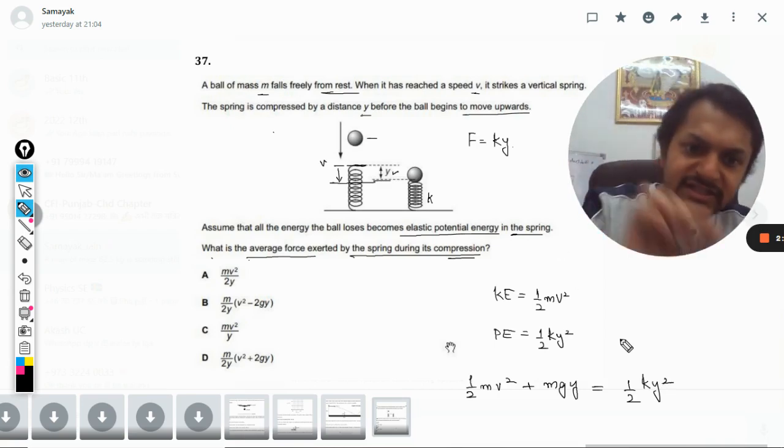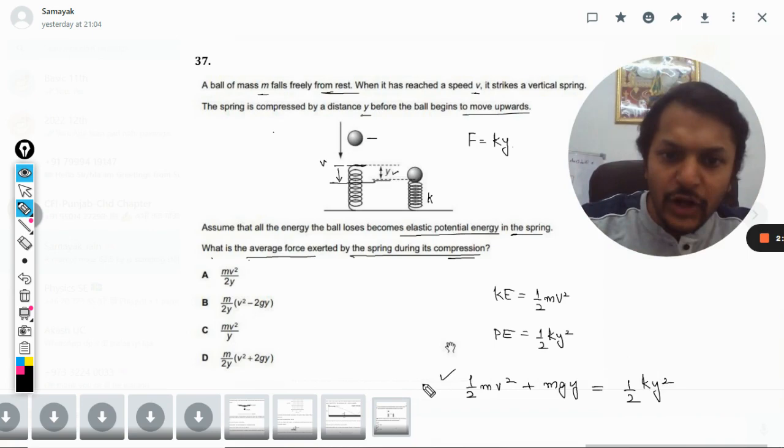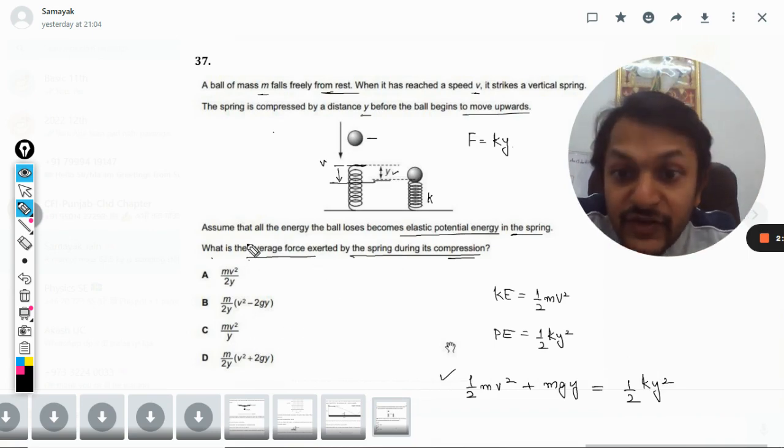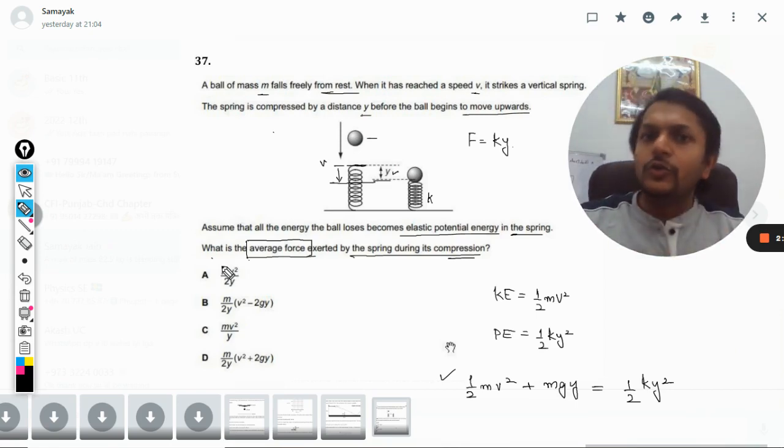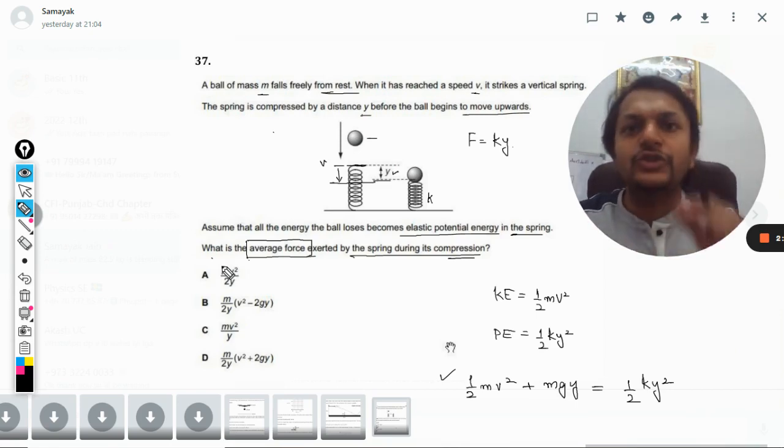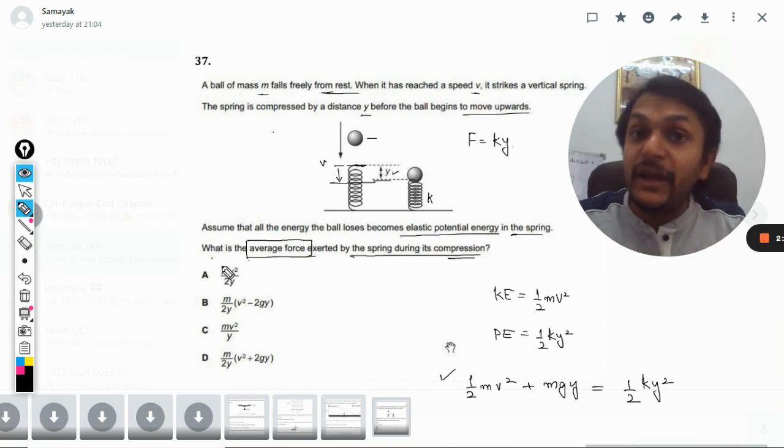Now this is our final equation. First of all, now what do we want is we want to find the average force exerted by the spring. So we all know that in the cases of springs, the force is never constant. It is dependent on the displacement of the spring and it is given by F equals ky.